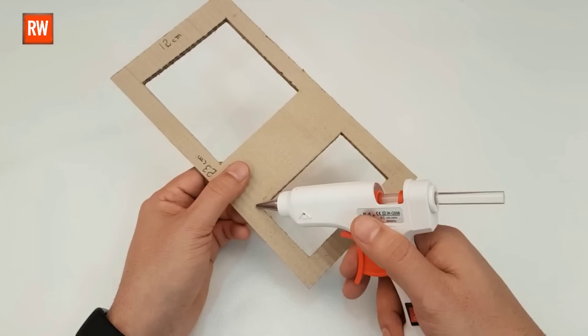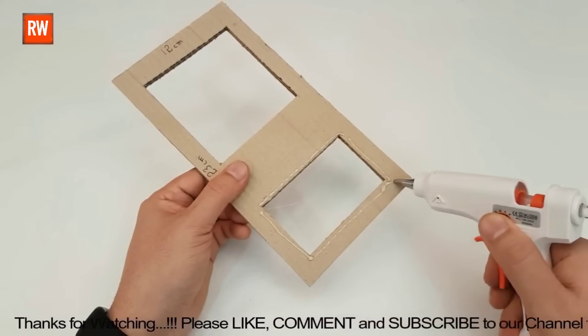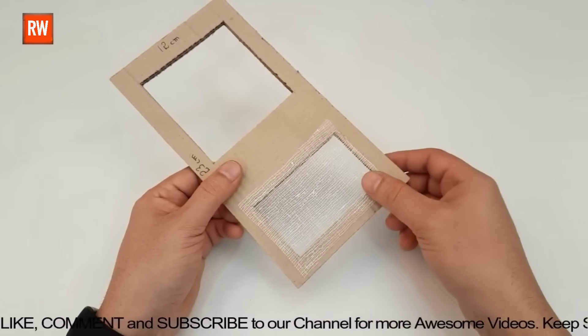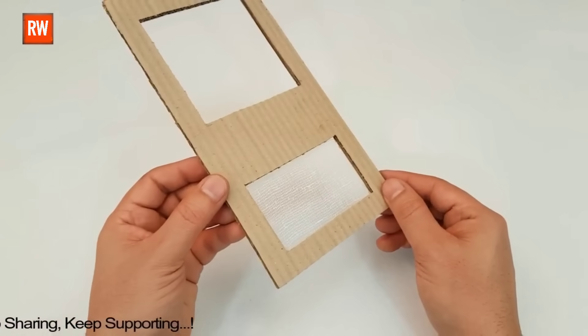So, I decided to use a narrow strip for this part, and I'm securing it firmly in place using a hot glue gun. The glue helps create a strong bond, making sure the strip stays attached properly and holds up during use. As you can see, the narrow strip is neatly and firmly attached.